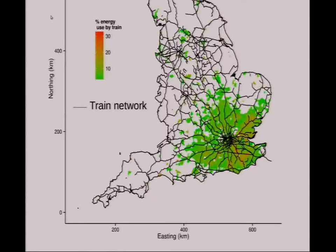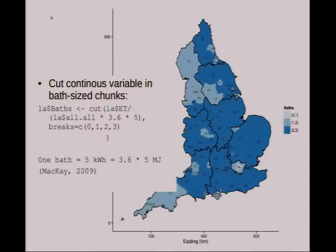It's useful for the researcher, not just the people you're trying to communicate information to. I tried to take it further. Megajoules per trip is not a very intuitive number — people don't use megajoules in their everyday life. I could have used kilowatt hours, but I wanted to make it as simple as possible. So I took my continuous energy variable and converted it into a unit I call the bath, because that's the amount of energy needed to take a bath. I've got a very simple R function which cuts your continuous variable.